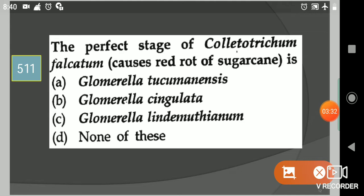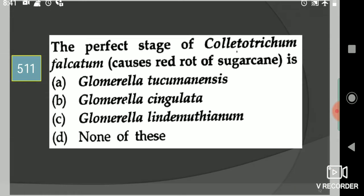Next question: The perfect stage of Colletotrichum falcatum that causes red rot of sugarcane is? Your options are Glomerella tucumanensis, Glomerella cingulata, Glomerella lindemuthianum, or none of these. Your answer is option A, Glomerella tucumanensis.